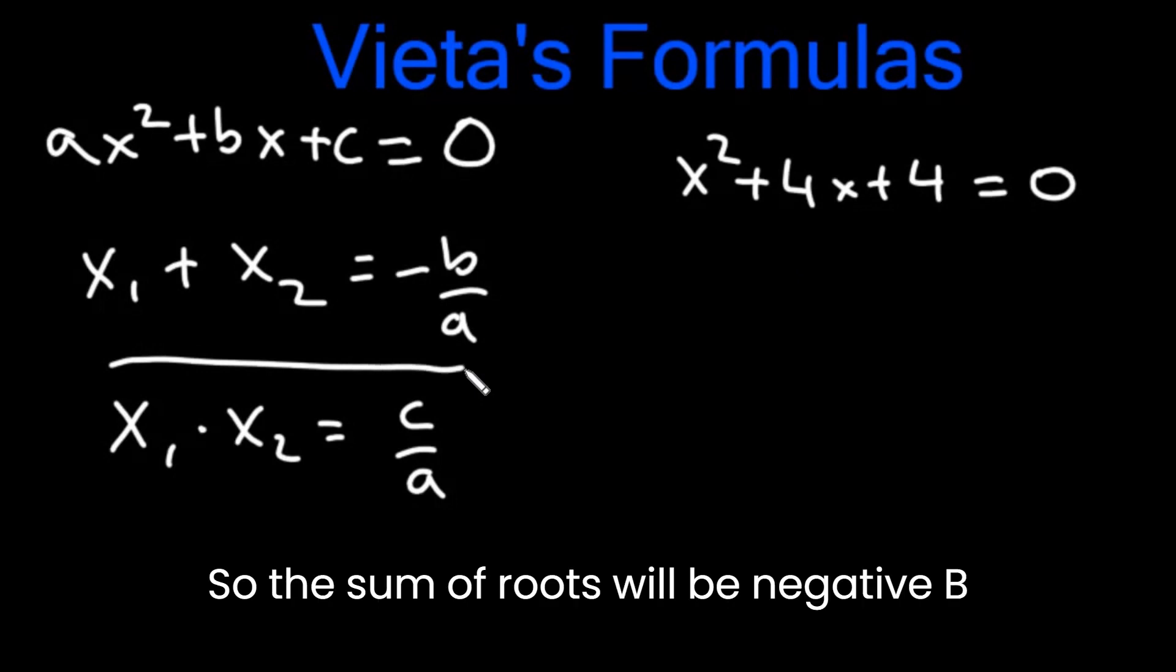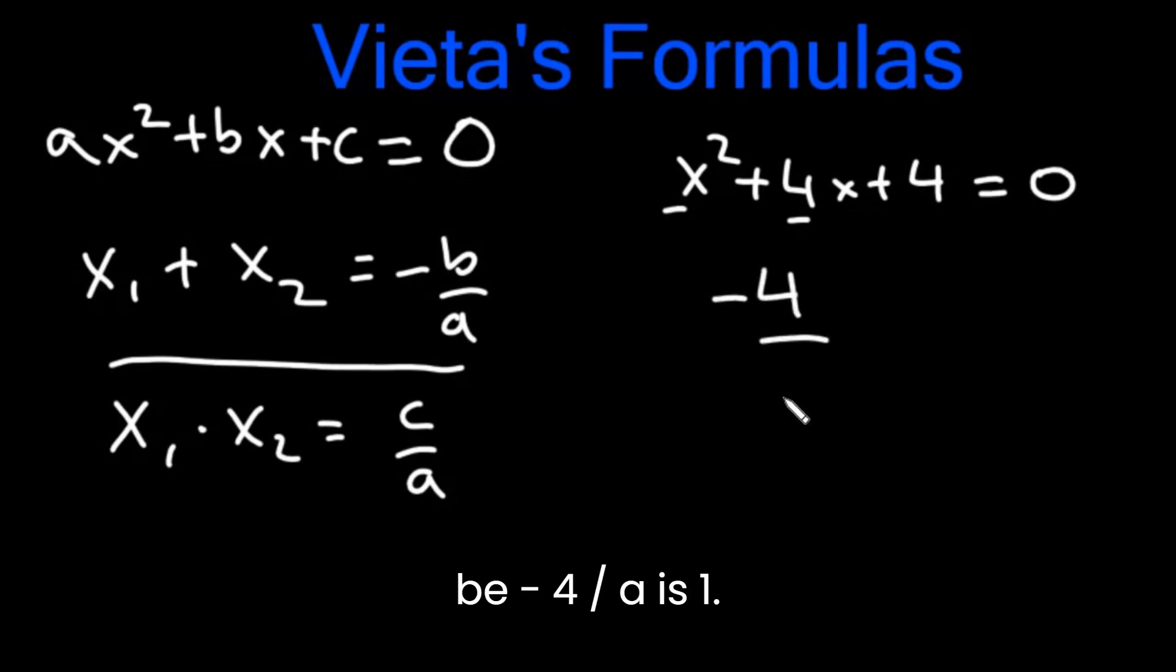The sum of roots will be negative b by a. b is 4, so it will be negative 4 over a is 1. So the sum of the roots is negative 4. It's as simple as that.